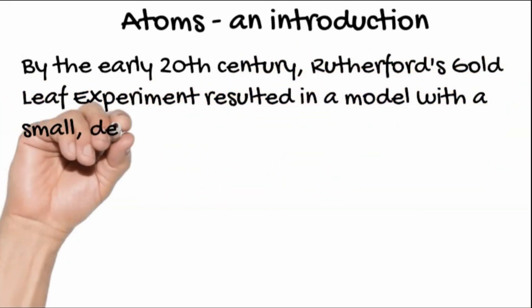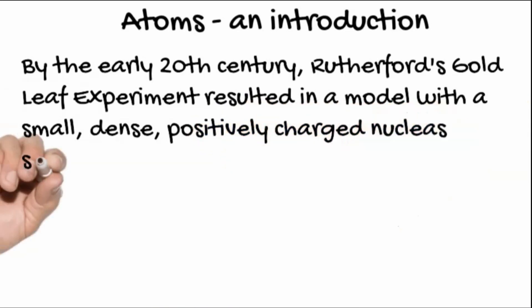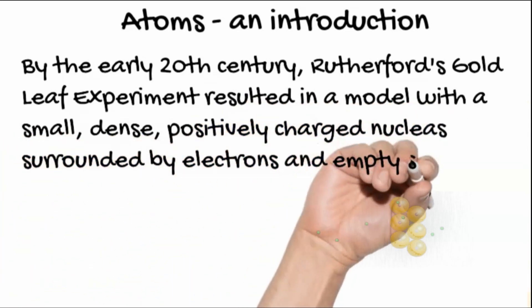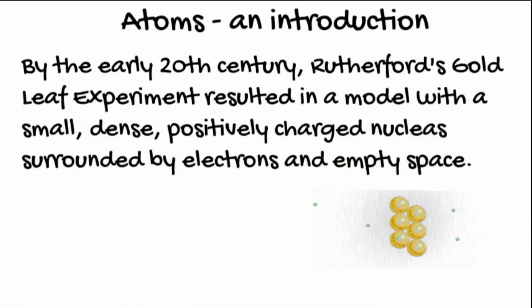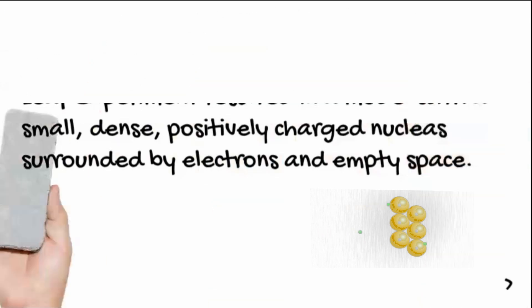By the early 20th century, Rutherford's gold leaf experiment resulted in a model with very small, very dense, positively charged nucleus surrounded by electrons in shells.